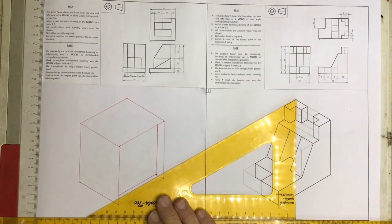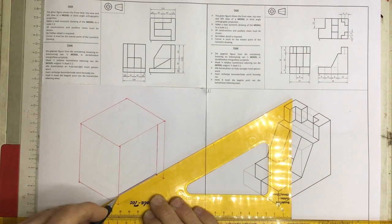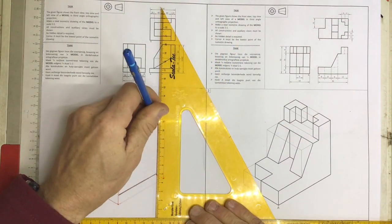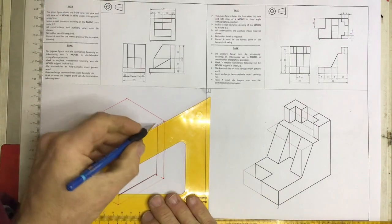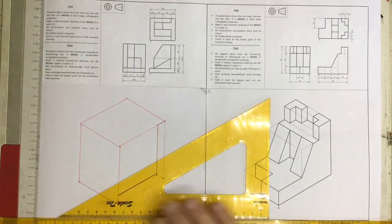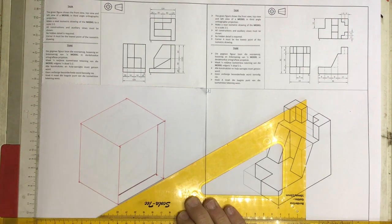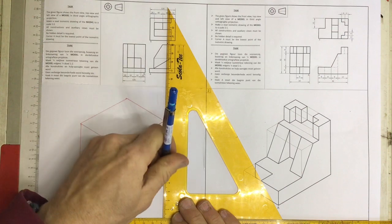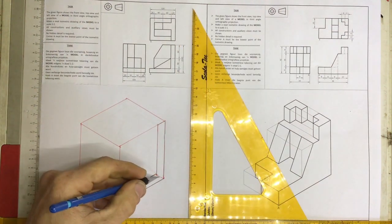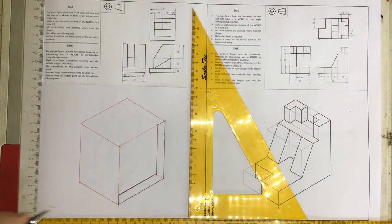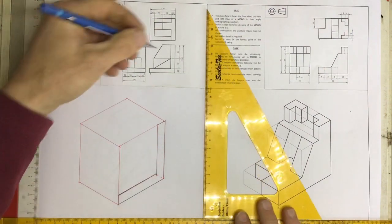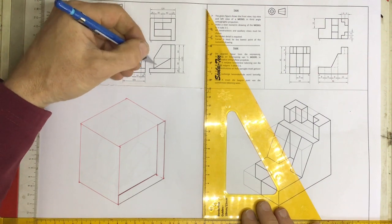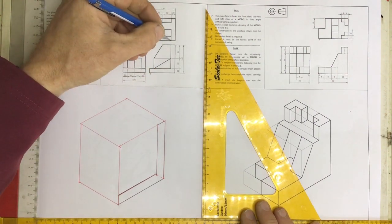Once I've got that, I can draw that in dark. The idea is to pick up tricks to speed up your drawing. Instead of measuring twice, I measured once. Everything beyond this edge, like the sloping line, is further back. How much further back? Let's have a look.